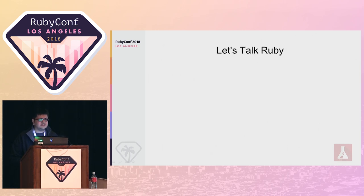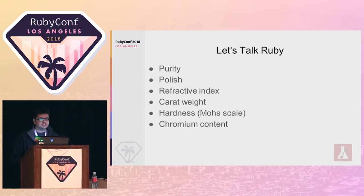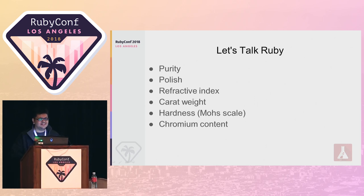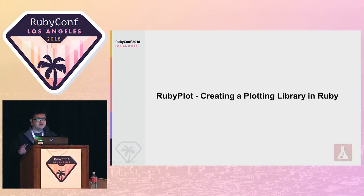What are the good qualities of Ruby? Well, you have got the purity, you've got the polish, the refractive index, and of course the chromium content. If you chuckled on that, then you'll love the joke I'm going to make at PerlConf. But seriously, the topic for the day is RubyPlot — creating a plotting library in Ruby.